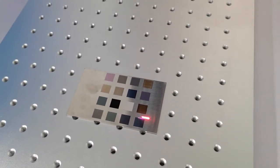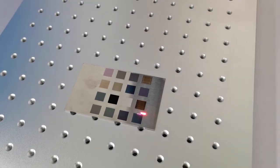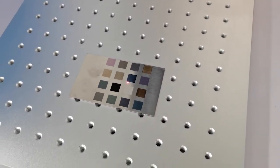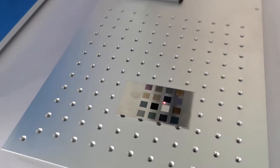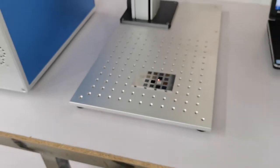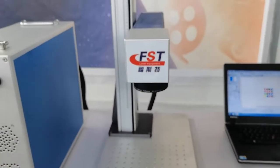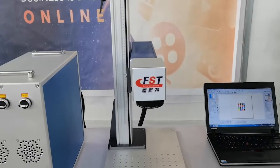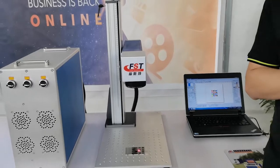For this machine, they can mark some non-metal and all metal. It means they have the function about fiber marking machine. And they can mark color on stainless steel.